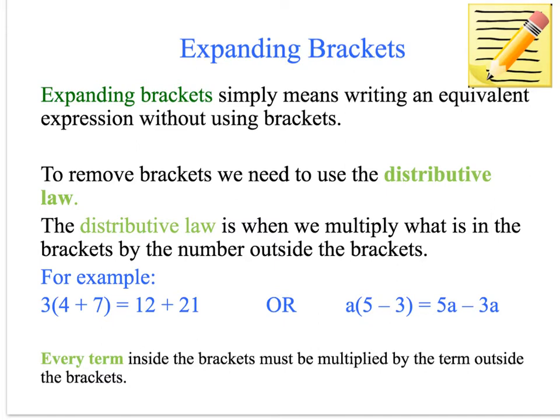You can see in my example that 3(4 + 7) means you multiply the 4 and the 7 by the 3 because the 3 is on the outside of the brackets. Everything inside the brackets—obviously you can't multiply the addition sign—but any numbers or variables inside the brackets need to be multiplied by whatever is outside the brackets.